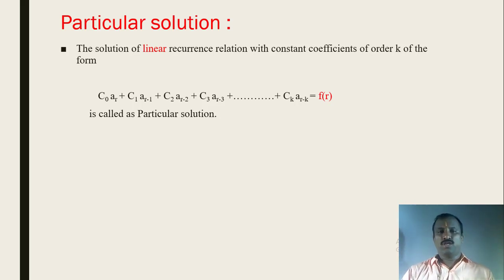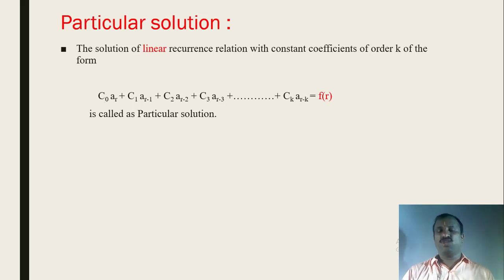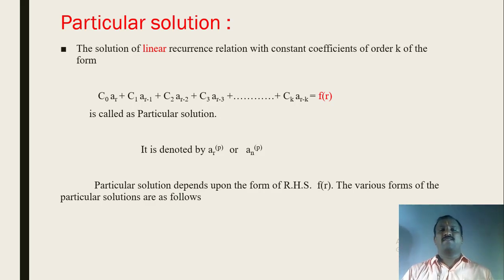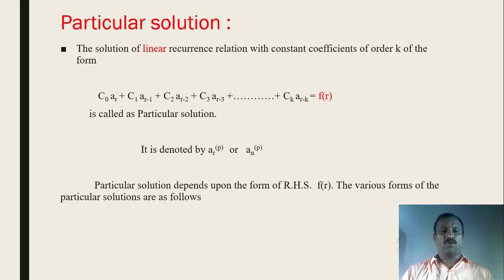The algorithm for finding a homogeneous solution is different, and the method for finding a particular solution is also different. There is no single fixed algorithm for a particular solution — the method changes example to example. The particular solution is denoted by the symbol aᵣ^(p). The particular solution of a given linear recurrence relation depends upon the RHS, that is f(r). The form of the particular solution depends upon the RHS f(r) of the linear recurrence relation, and the various forms are as follows.